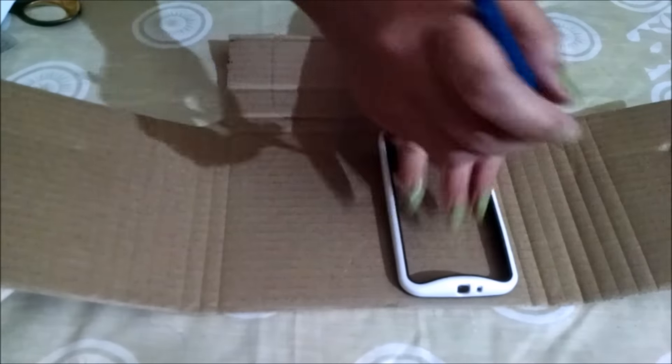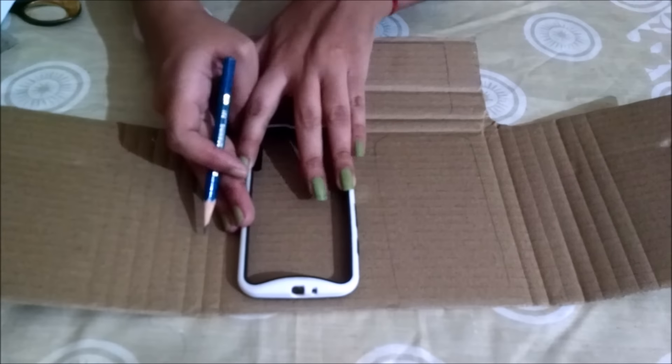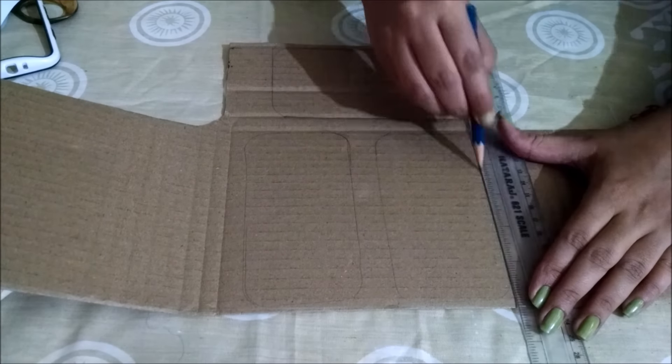Take the mobile or mobile cover if you have and trace it two times on cardboard, two times on hard sheet. Also make one template for pocket, one for lock, and one for the hanging charms.